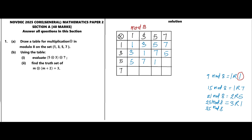35 in mod 8: 8 goes into 35 four times (8×4=32), and 35 minus 32 gives remainder 3. So 5×7=3 in mod 8. Then 7×1=7, which in mod 8 is 7. 7×3=21, and 21 in mod 8 we already worked out as 5. 7×5=35, and 35 in mod 8 is 3.